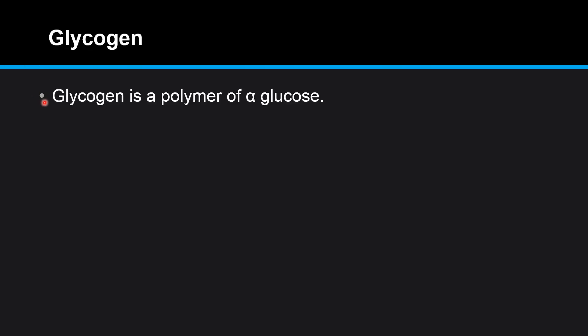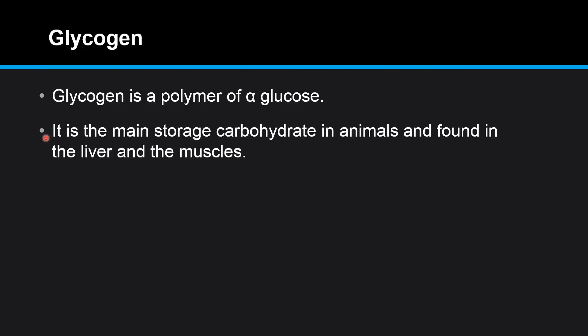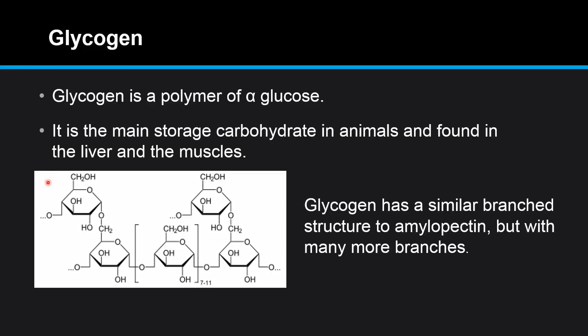Next we look at glycogen. Glycogen is a polymer of alpha glucose. It is the main energy storage carbohydrate in animals and is found in the liver and the muscles. Glycogen has a similar branched structure to amylopectin but with many more branches.